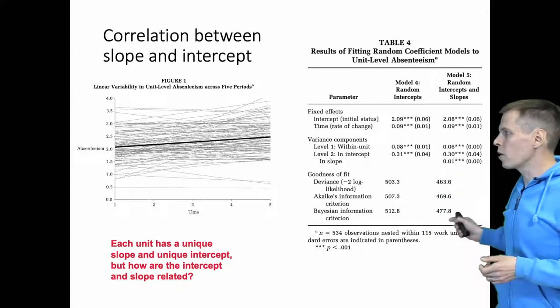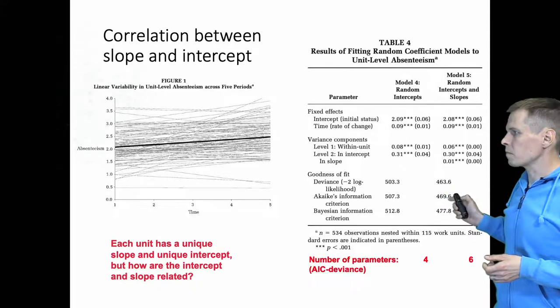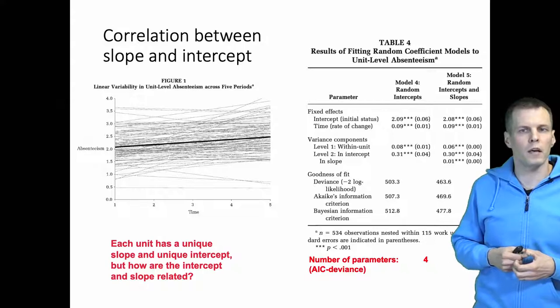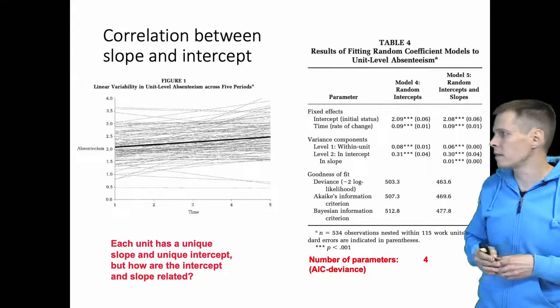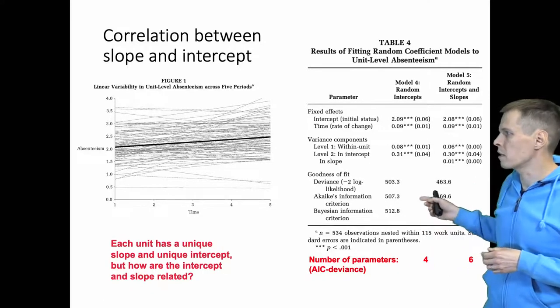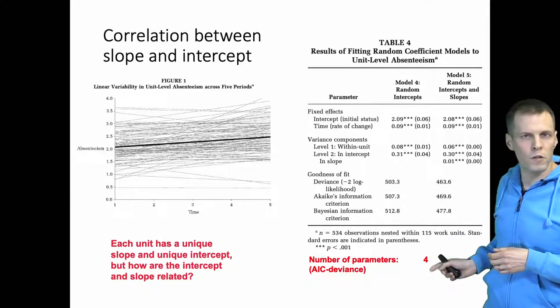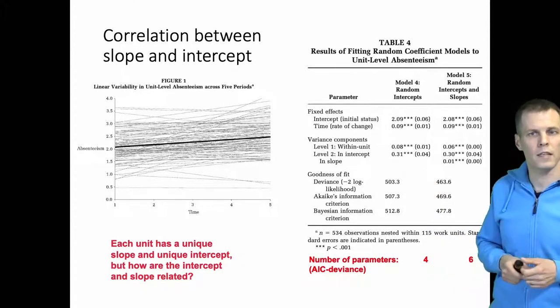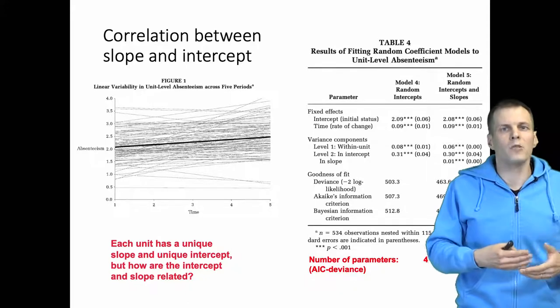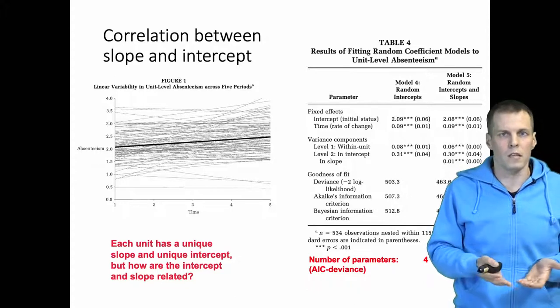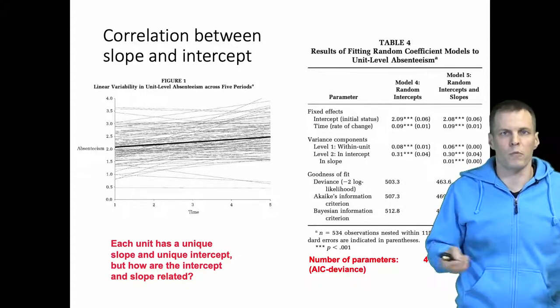How do we know? We know by looking at the deviance statistics and the AIC statistic. We can calculate the number of parameters—it's four for the first model, six for the second model. So they actually calculate the correct model but just don't report the covariance between the intercept and slope for some reason.